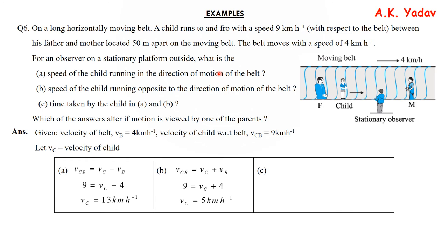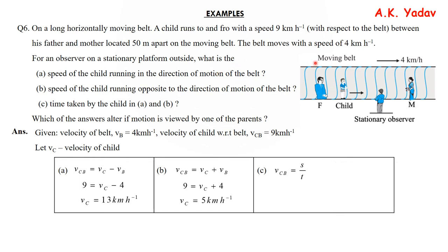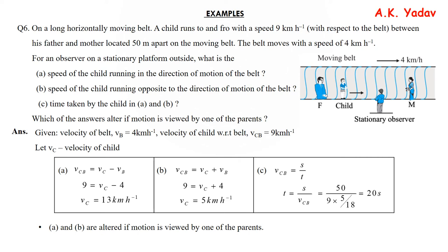For the third case, we find the time taken. Since the child moves on the belt, we use Vcb. T = S / Vcb = 50 / (9 × 5/18) = 20 seconds, after converting from km/h to m/s. Parts A and B are altered if motion is viewed by one of the parents, while part C — the time taken — remains the same.